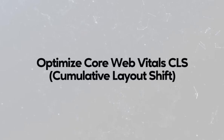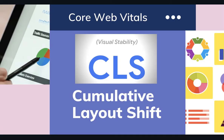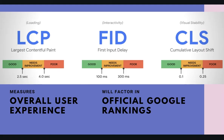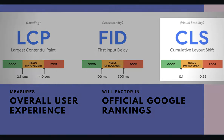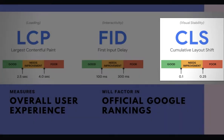Hey guys, in this video we'll talk about CLS or Cumulative Layout Shift, one of the metrics of Core Web Vitals. Core Web Vitals are a subset of factors that will be a part of Google's Page Experience score. These are used to measure overall user experience and will be an official Google ranking factor. So what is CLS?